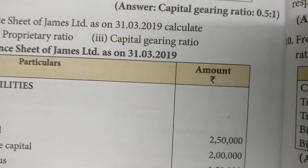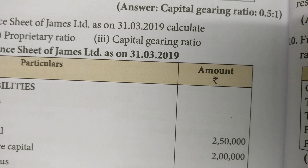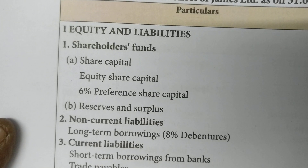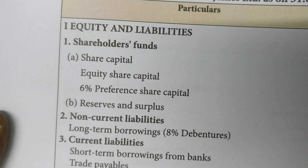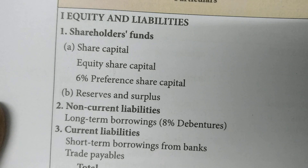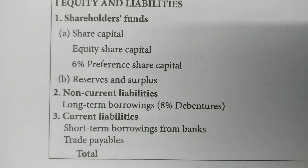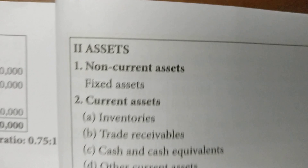Balance sheet of James Ltd. as on 31-3-2019. Equity and liabilities: shareholders' funds — share capital, equity share capital, 6% preference share capital, reserves and surplus. Non-current liabilities: long-term borrowings — 8% debentures. Current liabilities: short-term borrowings from banks, trade payables. Total.